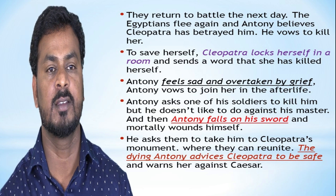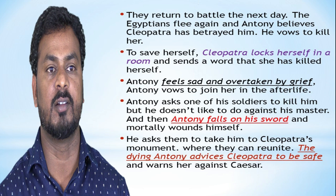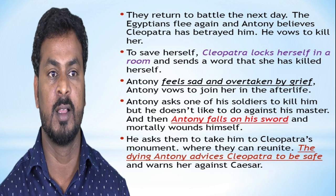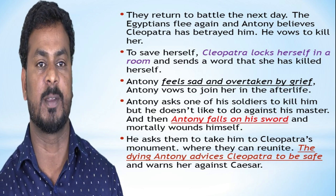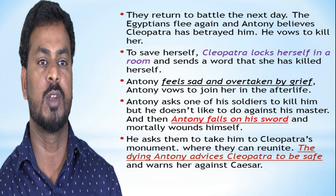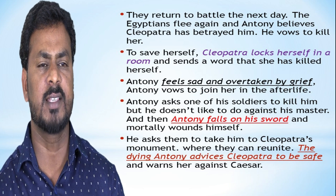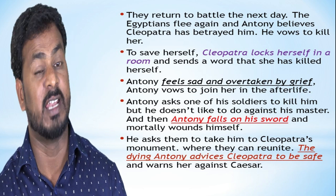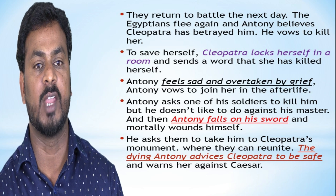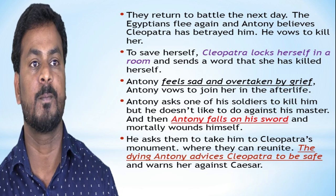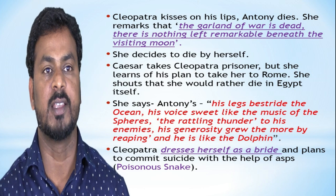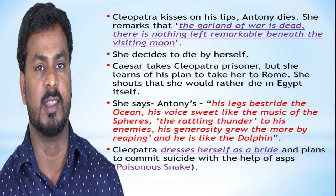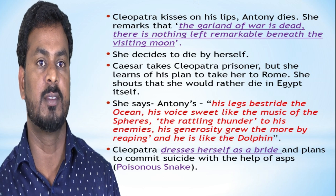Antony feels sad and is overcome with grief. Antony wants to join her in the afterlife. He asks one of his soldiers to kill him, but the soldier refuses to act against his master. Antony falls on his sword and mortally wounds himself. He has them take him to Cleopatra's monument, where they are reunited. The dying Antony advises Cleopatra to be safe and warns her against Caesar. Cleopatra mourns over his limbs. Antony dies, and she remarks that the glory of war is dead and there is nothing left remarkable beneath the visiting moon.